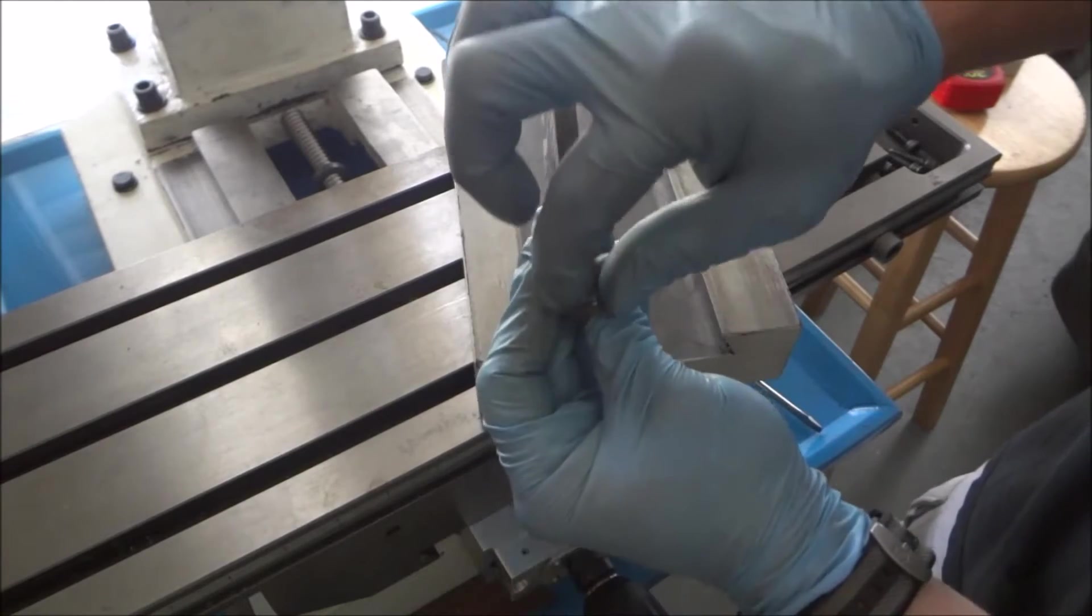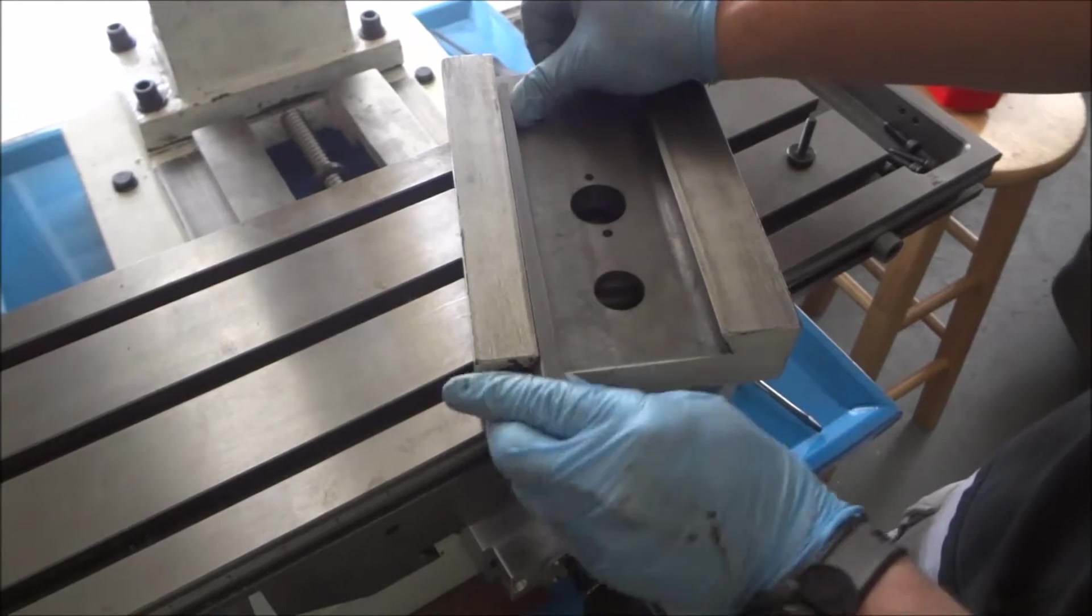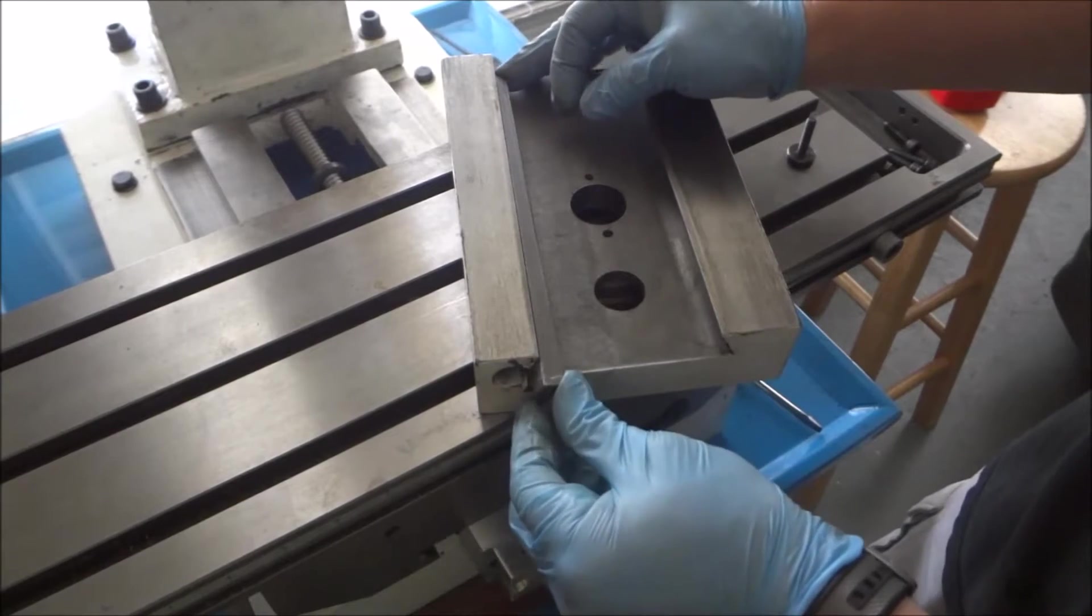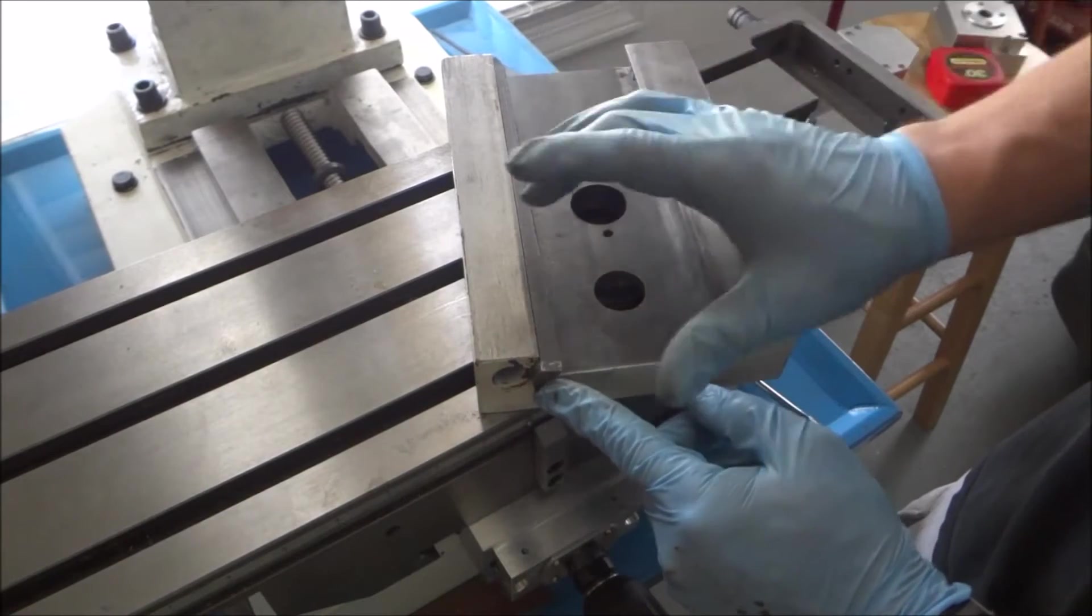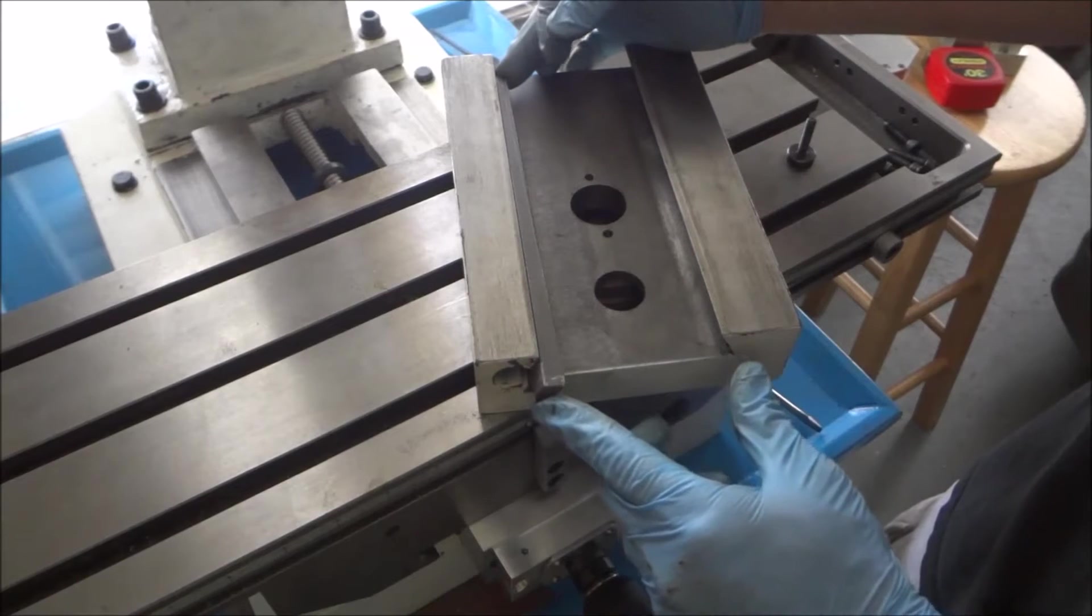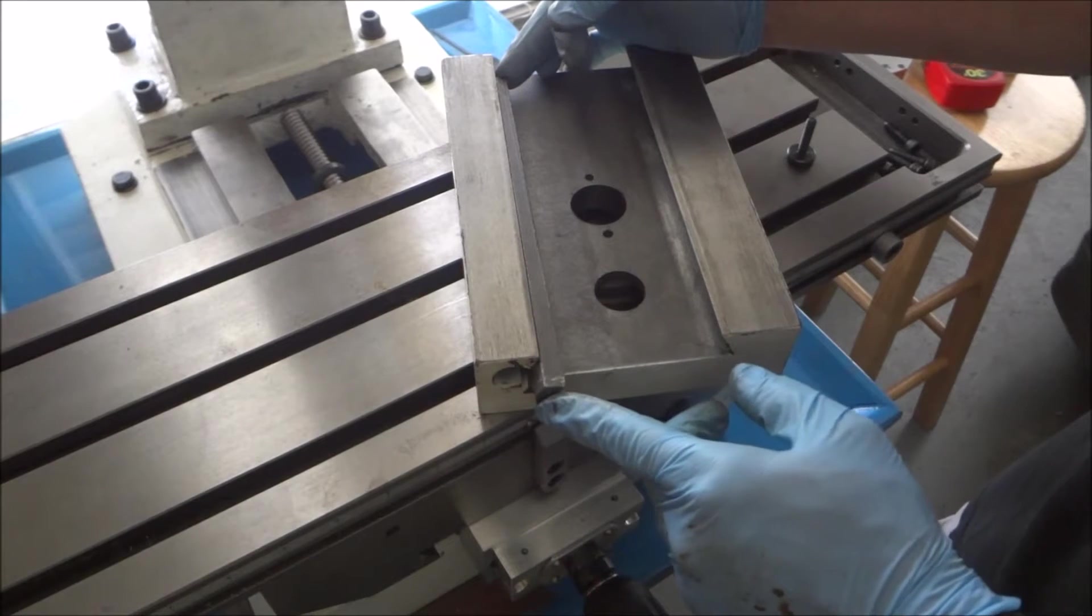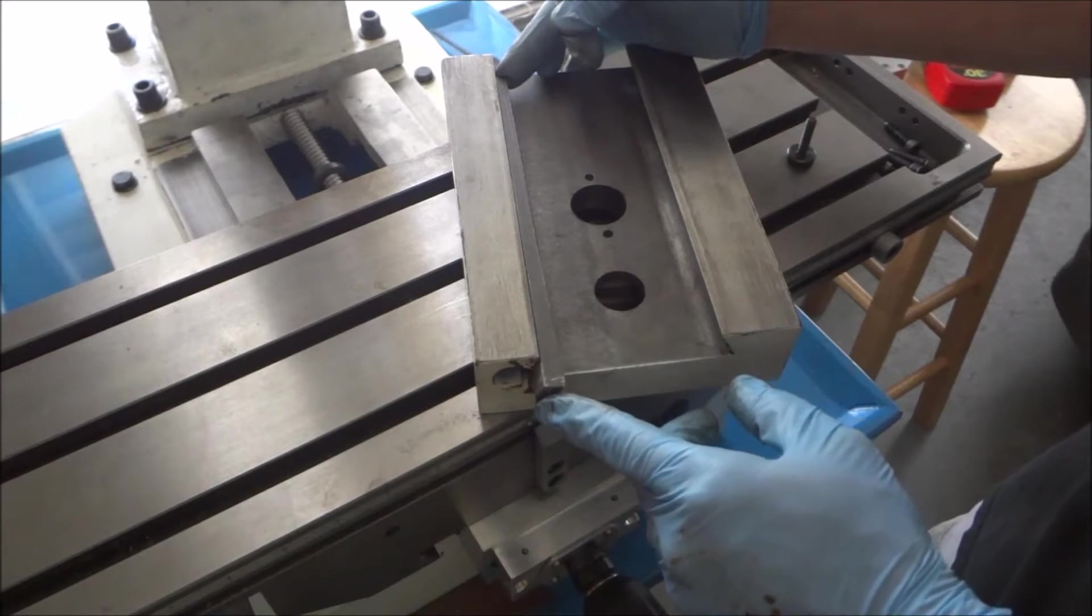When you screw this side in it increases the tension, and if you adjust it this way it decreases the amount of tension. There is a notch side and then this side is just square.